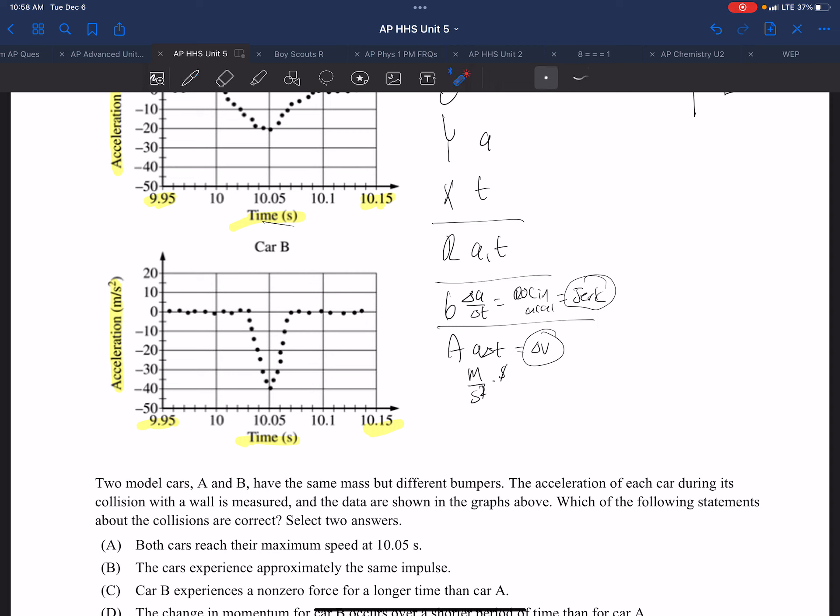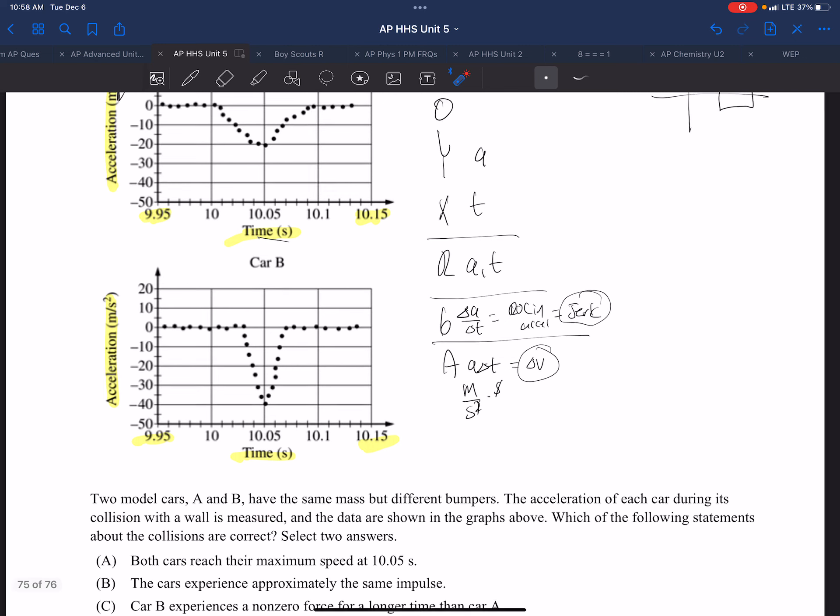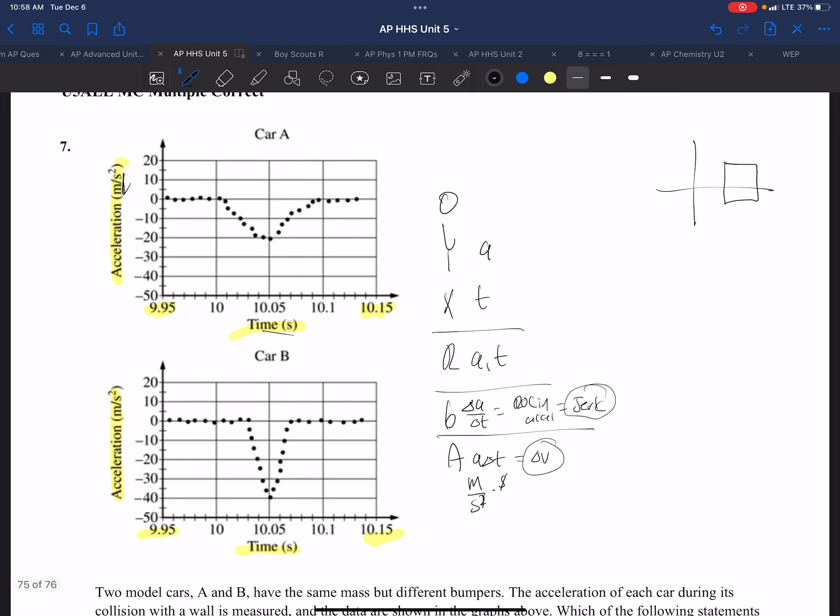We have two model cars A and B, same mass but different bumpers. The acceleration through its collision with the wall is measured. So picture we have is like this: we have a car like this going to collide with the wall, and this one is going to collide with the wall, and they have different bumpers.